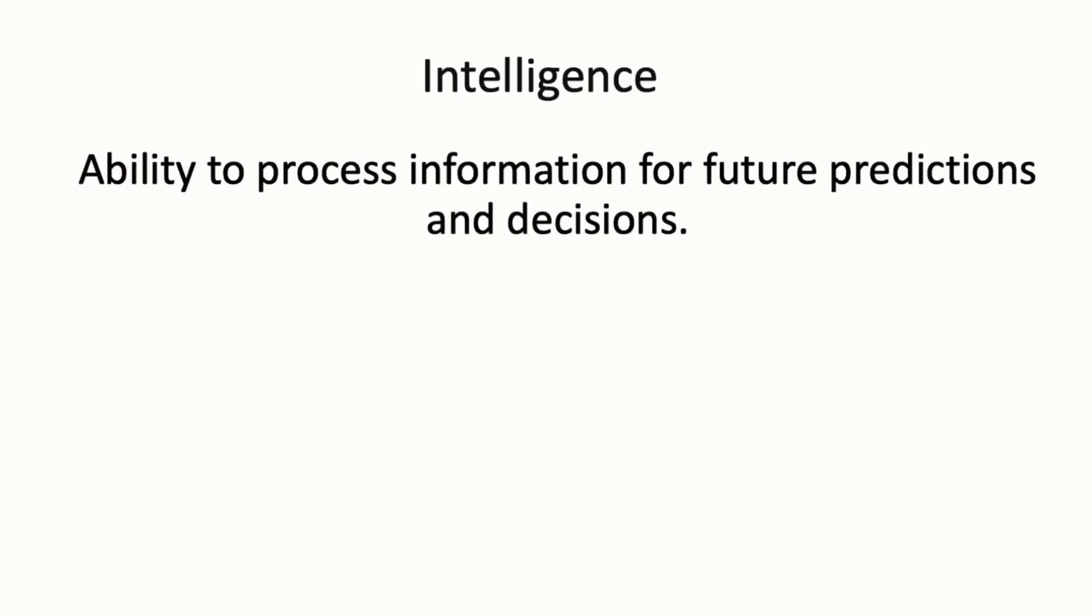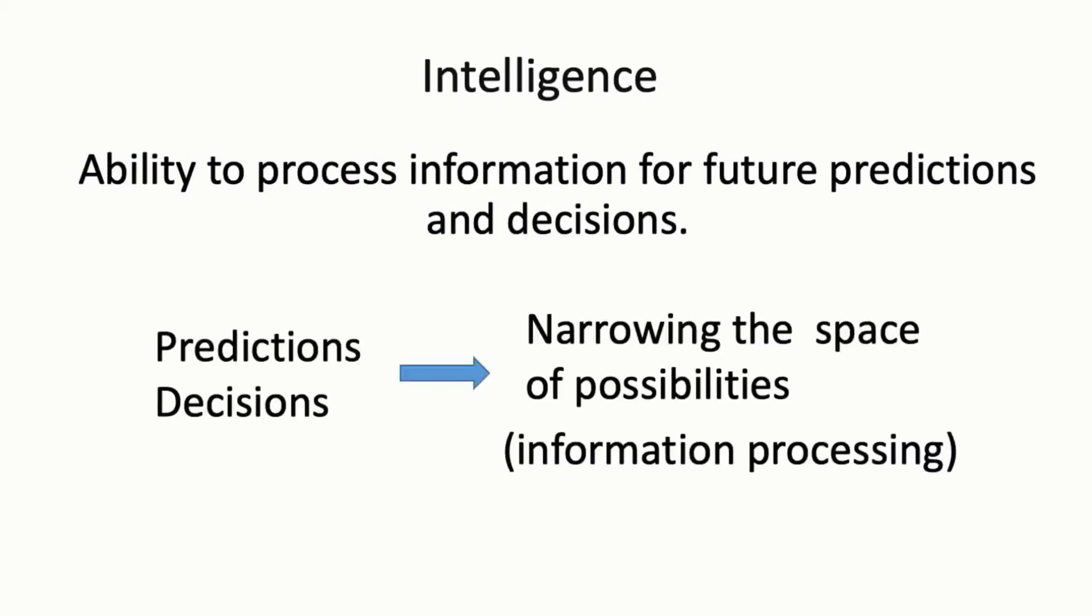I'd said that intelligence was processing information in order to make predictions and decisions. Actually, making predictions and decisions is again information processing. Predictions are narrowing the space of possibilities to what's likely to happen out of the space of all things that could happen. You make a prediction by narrowing from a larger space of all the things that could possibly happen in the future to the small space of things that are likely to happen based on your past and present experiences and knowledge.